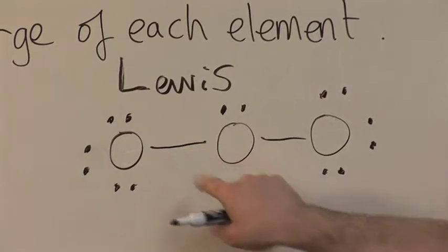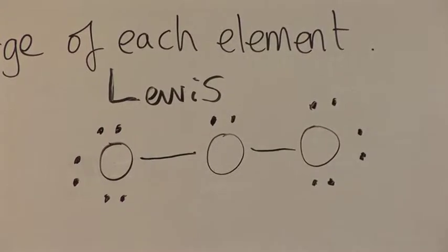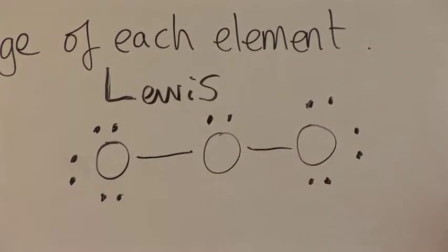We have two, four, six. So the central oxygen atom is not happy. And if it's not happy, it will destabilize the other two oxygens.